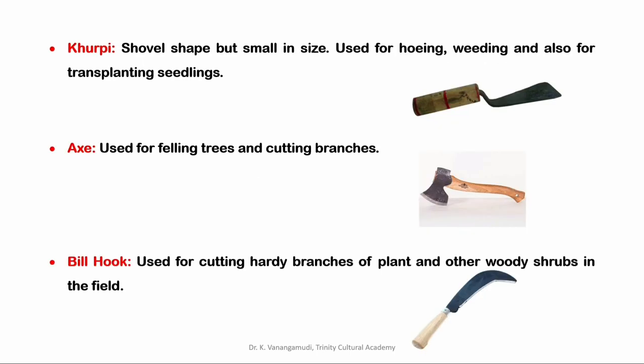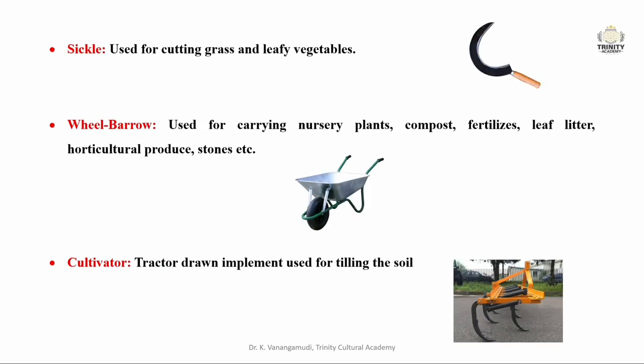Next is the furrow opener, used for opening narrow and shallow furrows after sowing seeds in the nursery. Next is kurfi, which is like a shovel but smaller in size with an iron blade and wooden handle, used for hoeing, weeding, and transplanting seedlings in some cases. Next is the axe — in Tamil, kodali — used for felling trees and cutting branches. The billhook is used for cutting hard branches of plants and other woody shrubs, made of iron and curved at the far end. The sickle is frequently used for cutting grasses and leafy vegetables.